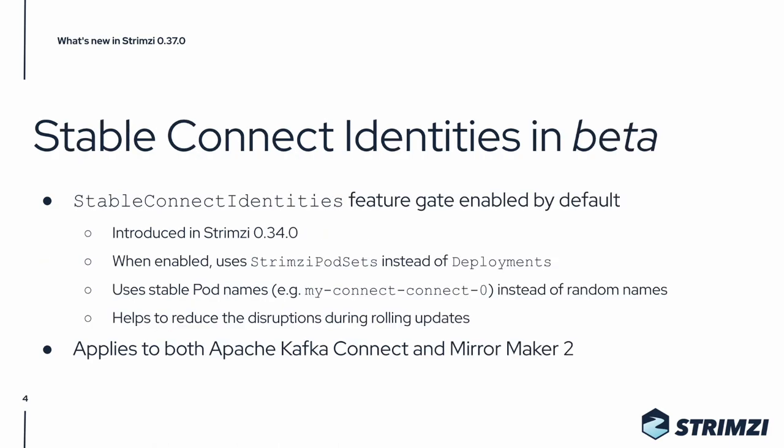One of the main changes in this release is that the Stable Connect Identities feature gate is moving into the beta phase and is now enabled by default. This feature gate was originally introduced in Strimzi 0.34, and it used Strimzi pod sets instead of deployments in the Kafka Connect and Kafka Mirror Maker 2 clusters. That means it's also using stable pod names instead of random names, which helps to reduce disruptions during rolling updates. If needed, this feature gate can still be disabled manually.